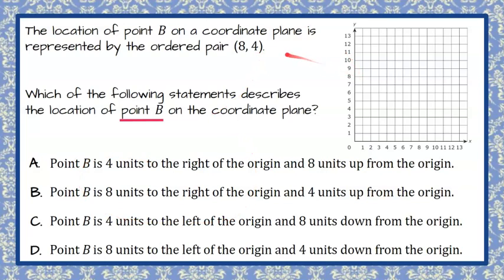So we have a first quadrant graph here because we have our ordered pair, and that is our x-coordinate and our y-coordinate.